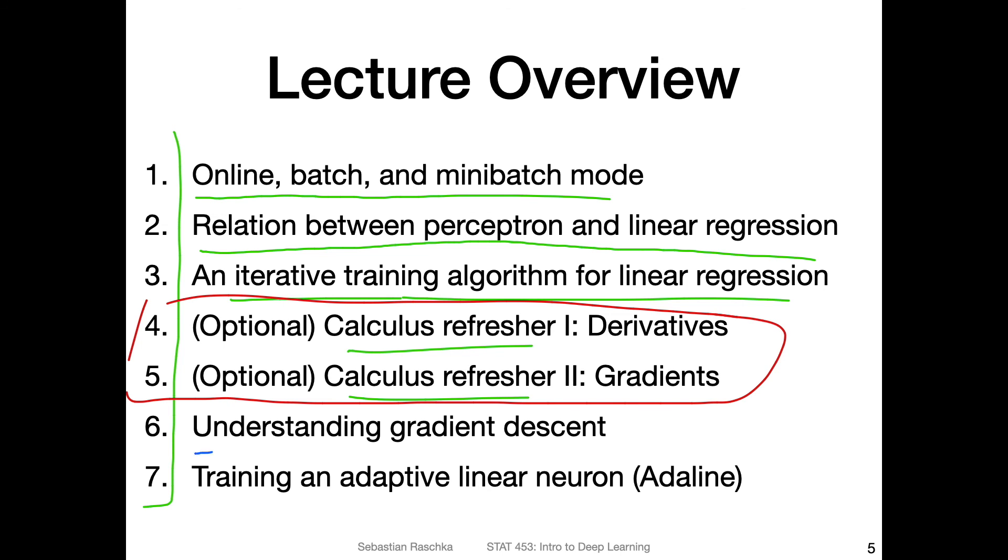And after that, we will be talking about gradient descent, that is the learning algorithm that I briefly outlined in the previous video. And then we will be training a linear neuron Adaline. And I will show you a code example in PyTorch of how we can train such a linear neuron using the concept of gradient descent. Alright, so then let's get started with the first video on online batch and mini batch mode in the next video.